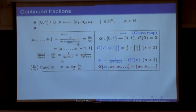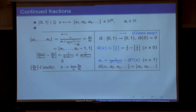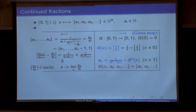In the opposite direction, given a number in (0,1) — taking for simplicity a rational number — it is possible to retrieve the digits of the number simply by iterating what is called the Gauss map. This is the main dynamical system I'm going to be interested in: the Gauss map, which goes from (0,1) to (0,1). We are only interested in irrational numbers. This maps x into the fractional part of the reciprocal of x. One can see that a_n can be retrieved simply by applying iterates of g to x.